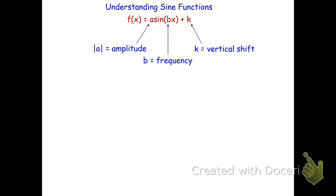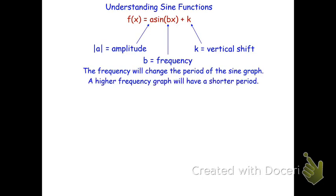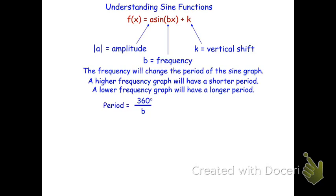k is always the vertical shift. The frequency is what changes the period of the sine graph. A higher frequency graph will have a shorter period, whereas a lower frequency will have a longer period to complete a sine wave. The period can be found by taking 360 divided by the frequency, or the frequency can be found by taking 360 divided by the period. The period times the frequency is always 360 — we say b·p = 360.